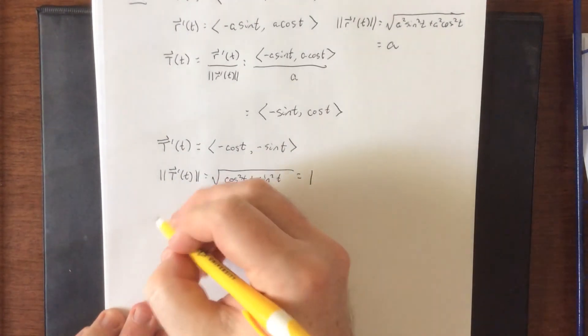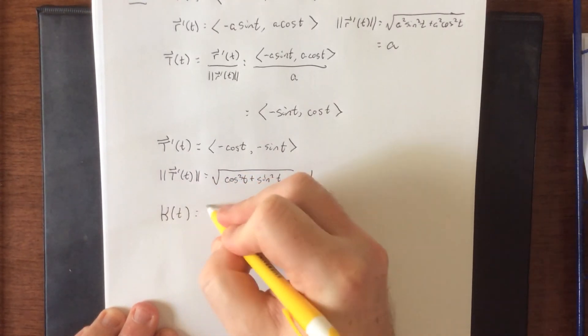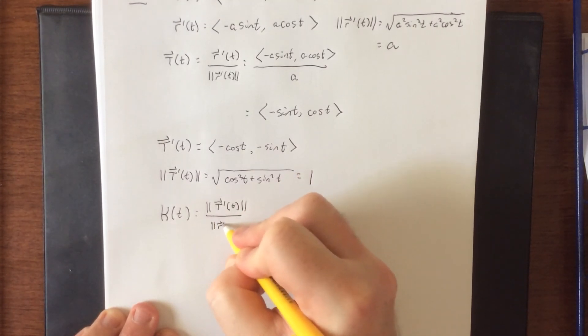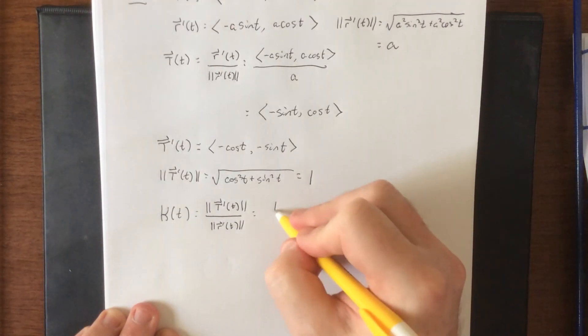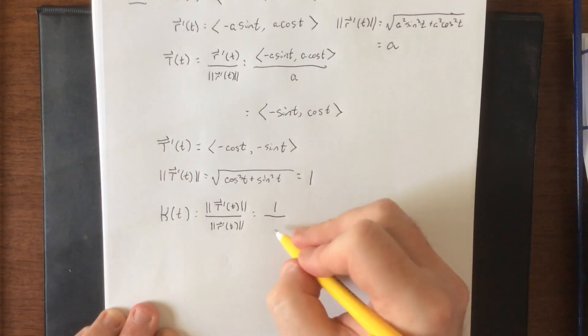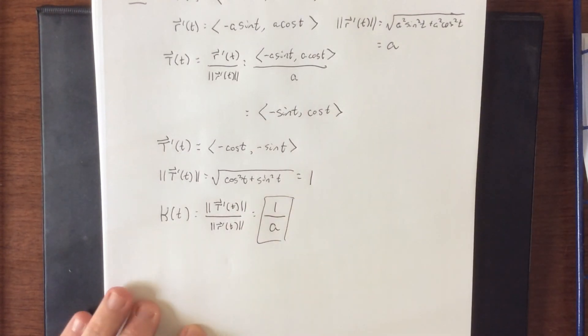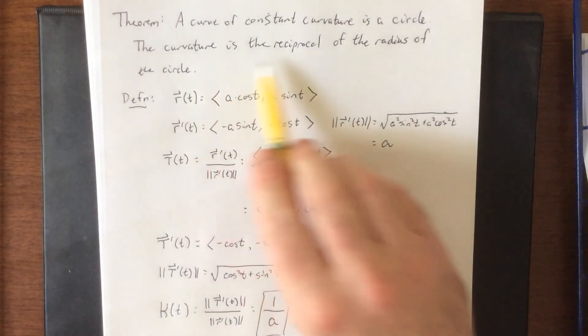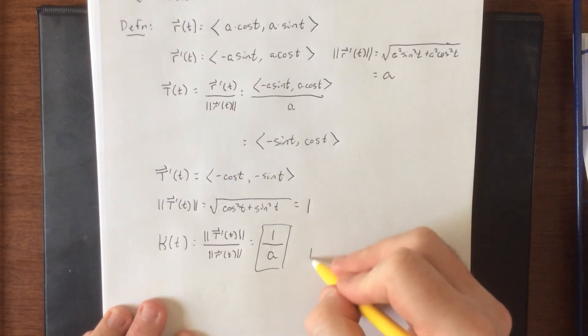According to the formula on the previous page, kappa of t is supposed to be equal to the magnitude of T prime of t divided by the magnitude of r prime of t. We got this to be 1, we got this to be a, and that is exactly what we were trying to show. The radius of the circle was a, and the curvature was the reciprocal of the radius of the circle. So that completes my proof.